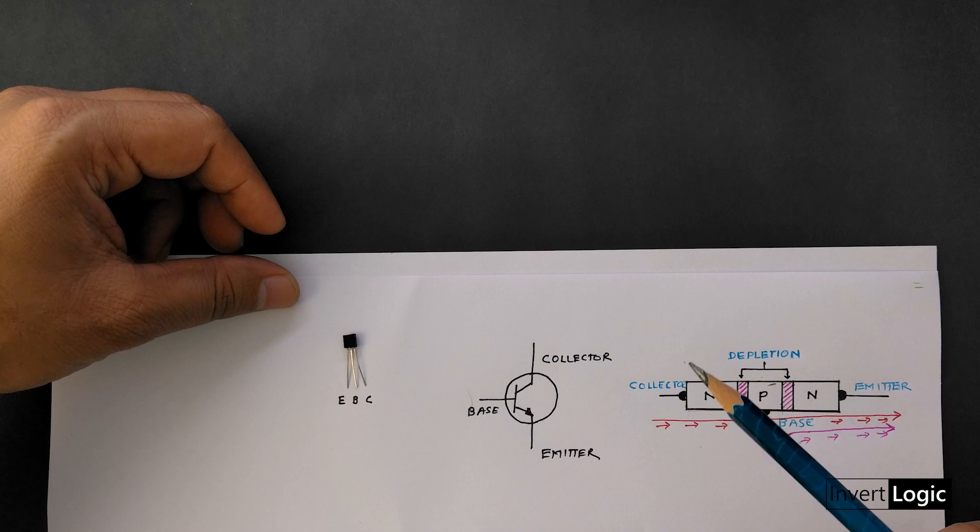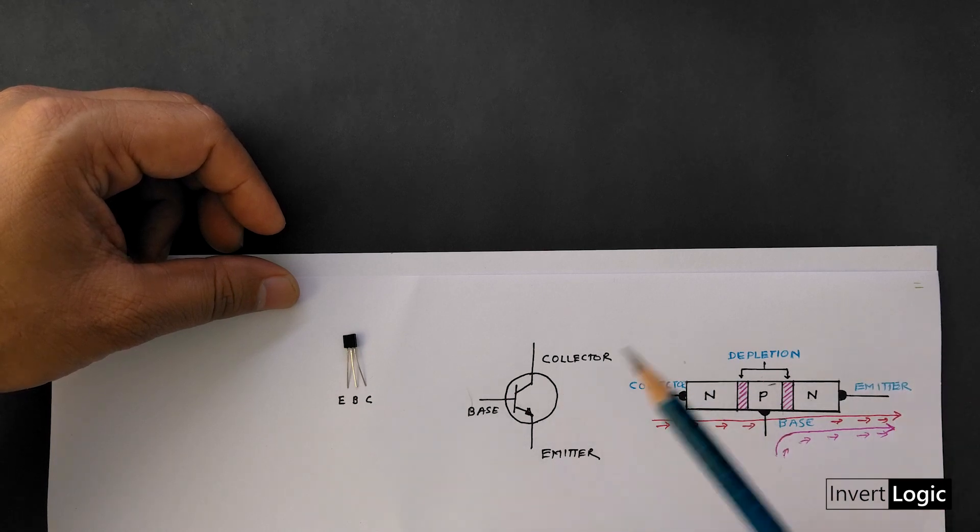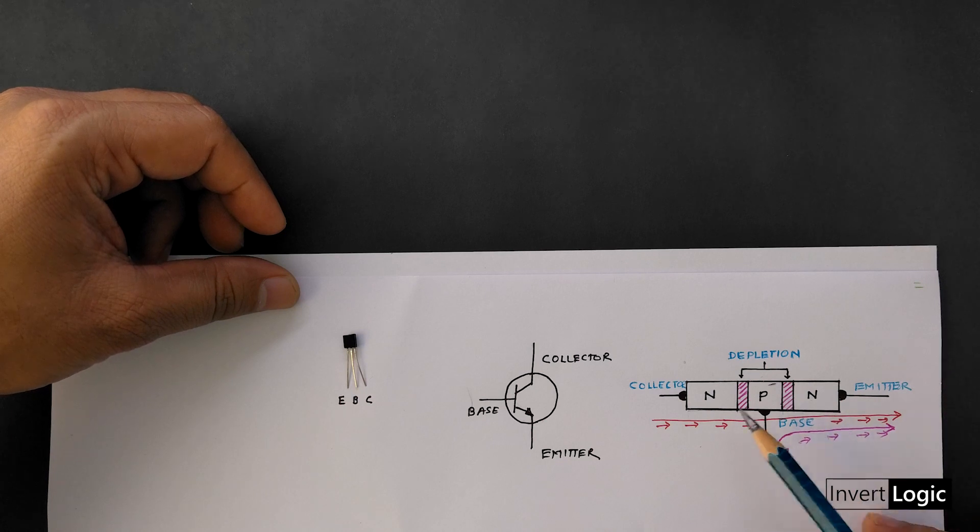So as you can see in this diagram, we have one P type silicon layer sandwiched between the two N type silicon layers.